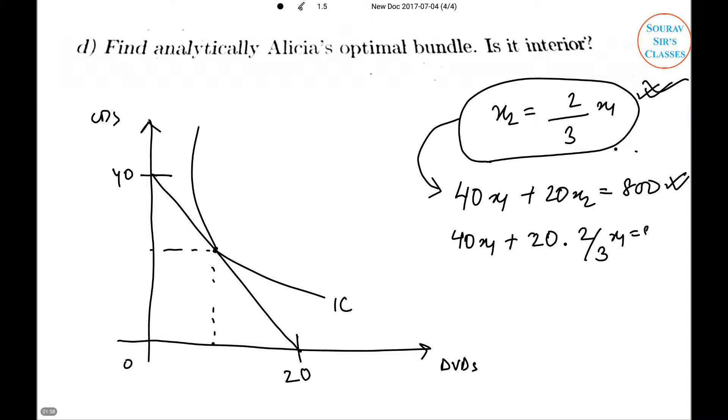...x1 is equal to 800. So x1 star - I am denoting it star because it is our answer - will be 15. And if I substitute this value back in this relation, I will get x2 star to be 10. So our coordinate or the optimum bundle will be 15 and 10.